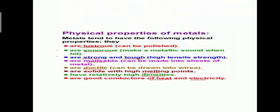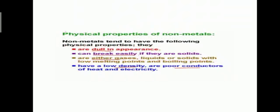Physical properties of metals: they are lustrous, sonorous, strong and tough, malleable, ductile, solids with high melting points, relatively high densities, and good conductors of heat and electricity. All metals are solid at room temperature except mercury, which is liquid. Physical properties of non-metals: they are dull in appearance, can break easily if solid, and are either gases, liquids or solids with low melting and boiling points. They have low density and are poor conductors of heat and electricity.